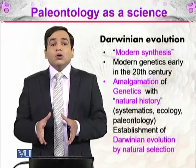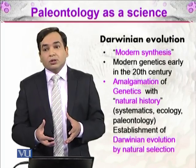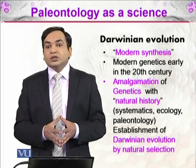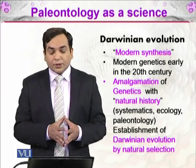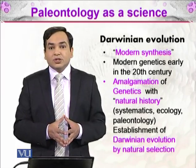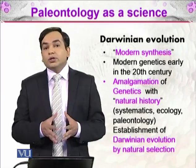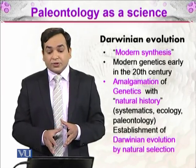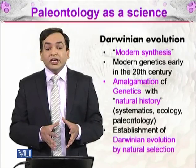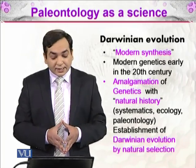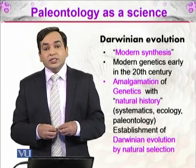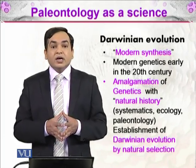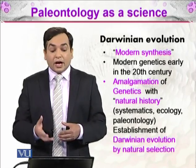After all this work was done by Darwin, many people were against it while many others were receptive to his ideas. When the 20th century began, modern genetics evolved, and we came to understand how genetics drives evolution. The amalgamation of genetics with natural history — which includes systematics, ecology, and paleontology — gave rise to the theory of modern synthesis. With the help of this theory, we have established the idea of Darwinian evolution by natural selection as the framework we use today.